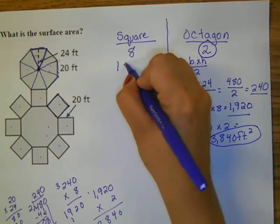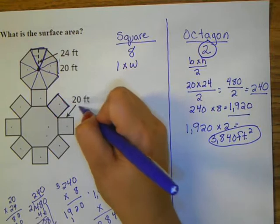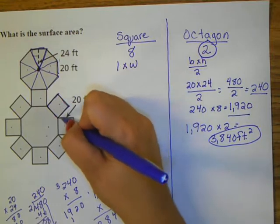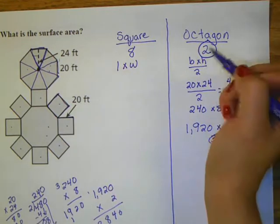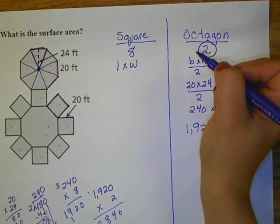Now I'm going to figure out the surface area for my eight squares. I know the formula to find the area of one square is just length times width.